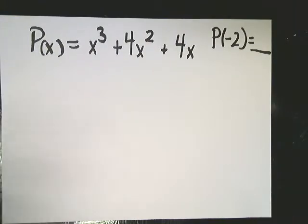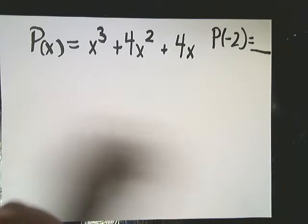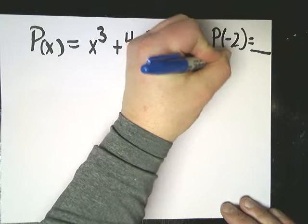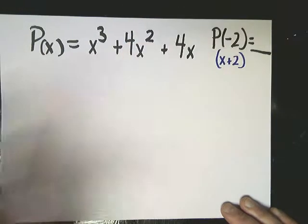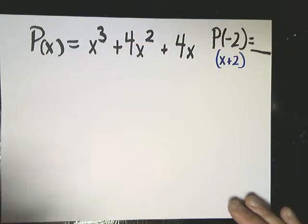In this case, they give you the function x to the third plus four x squared plus four x, and then they say, what's P of negative two? And what they're really asking here is, if I divide by x plus two, what do I have left over? What's the remainder?